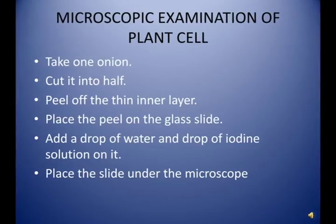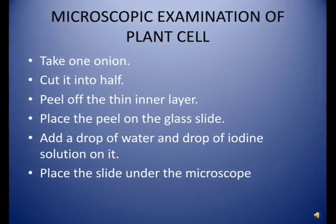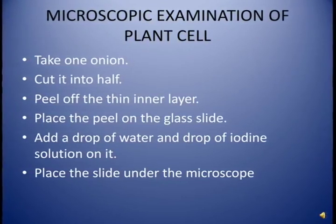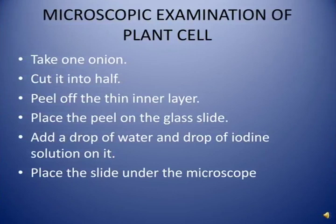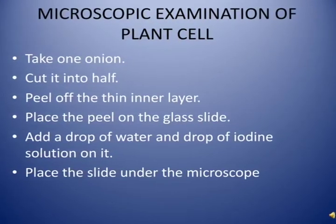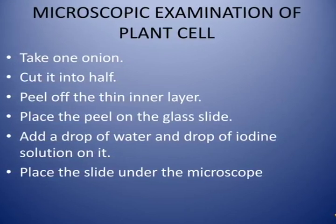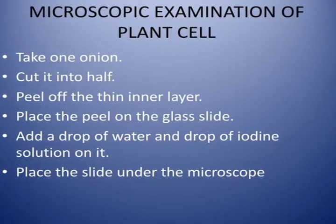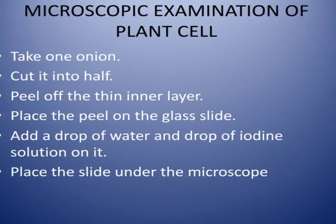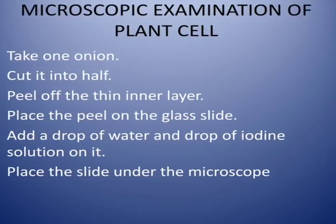Now we will look at the microscopic examination of plant cells — how a plant cell looks under the microscope. For this activity: take one onion, cut it in half, peel off the thin layer using forceps, place the peel on a glass slide, put a drop of water on it, and add a drop of iodine solution.